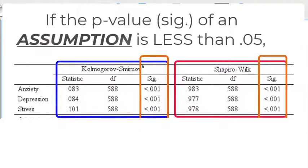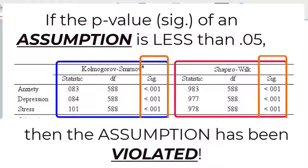Remember, when you're checking assumptions, if the p-value is less than 0.05, in other words, if you get significance while checking an assumption, that means you violated that assumption.